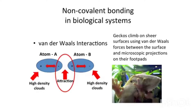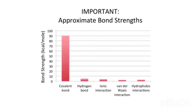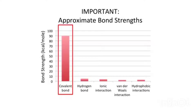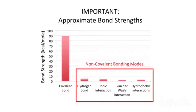Looking at bond strengths, covalent bonds on average — particularly a carbon-carbon bond — are about 90 kilocalories per mole. You have to put in that much energy to break a carbon-carbon bond. On the other hand, non-covalent binding is much lower energy, generally less than 5 kilocalories per mole. In order: hydrogen bond interactions are a little better than ionic interactions, which are a little better than hydrophobic, which are a little better than van der Waals — the weakest of the non-covalent. But all of them are less than 5 kilocalories per mole, meaning they can provide stability but can also be easily broken, as with the gecko climbing up the wall of glass.